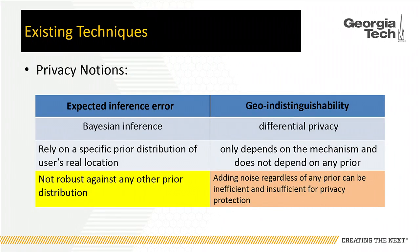Comparing these two different privacy notions: expected inference error assumes some prior distribution of the adversary for the user's real location, so it will not be robust against adversaries with any other kind of prior distribution or knowledge. You may think geo-indistinguishability is more robust since it does not make any assumption on prior information. But in our work, we show that uniform noise regardless of any prior can be insufficient for protecting location privacy and inefficient in utility.